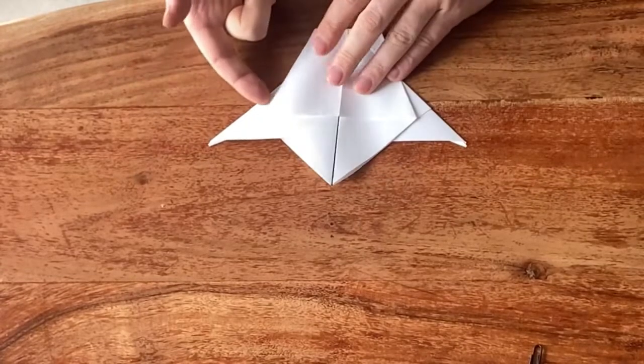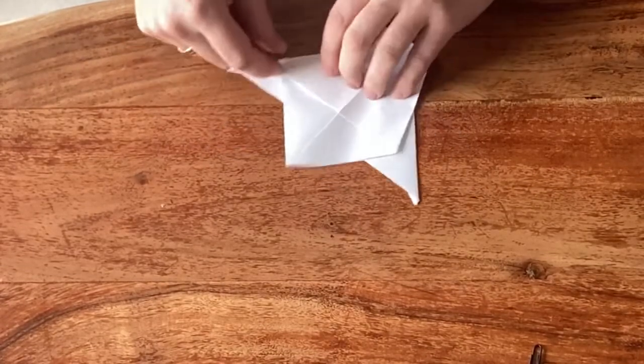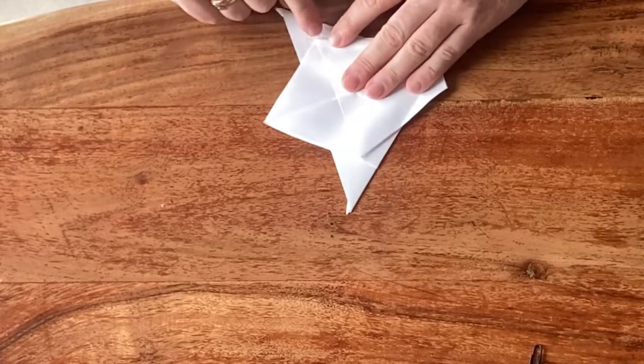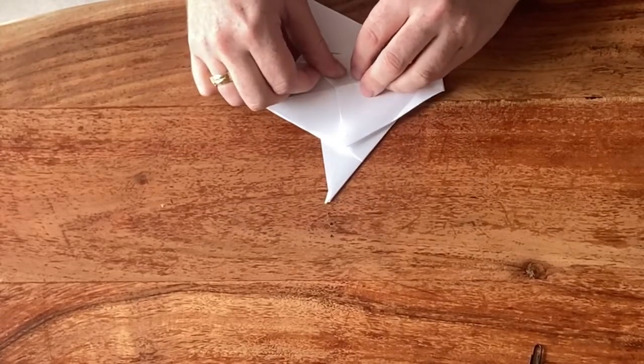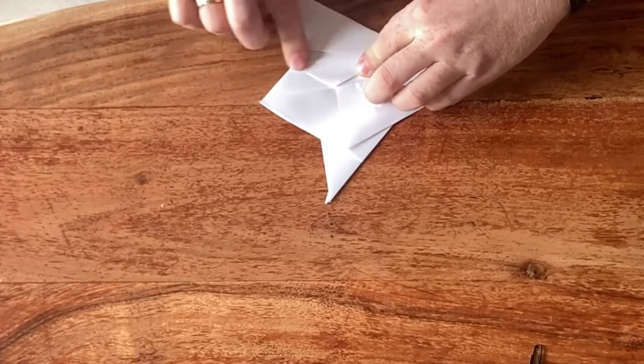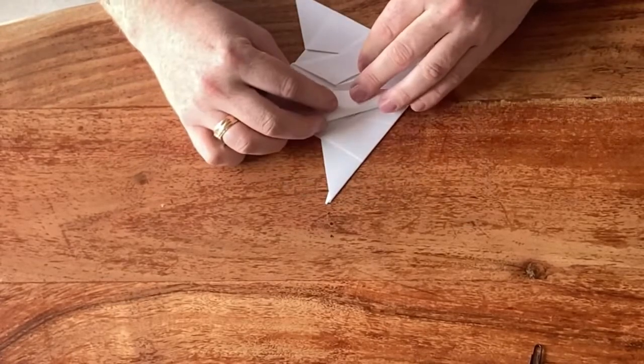Then what we're going to do is take this tip, this corner, and fold it towards the middle. And then it's right on this point. We do the same on the other side.